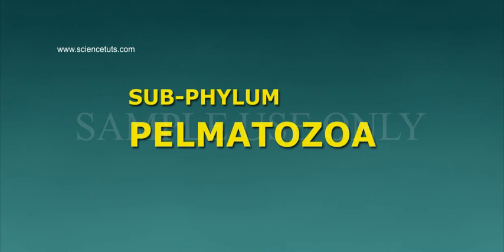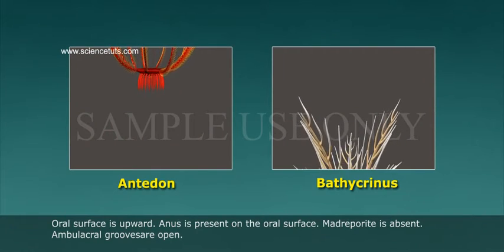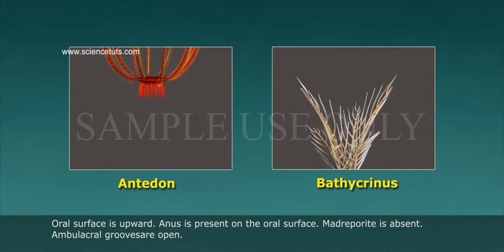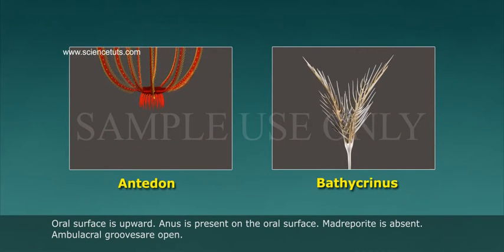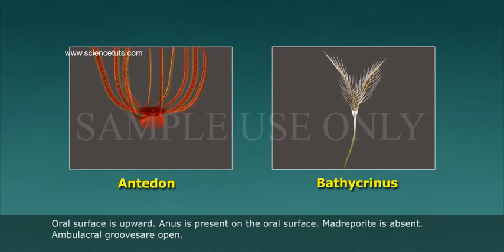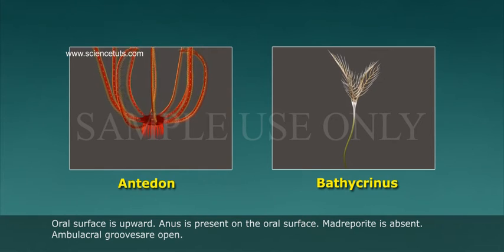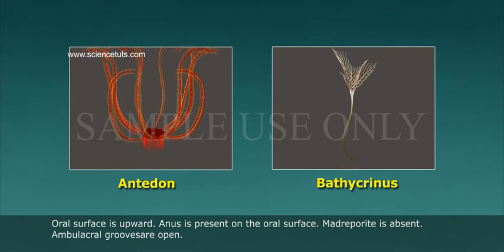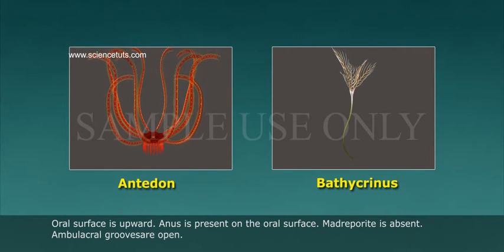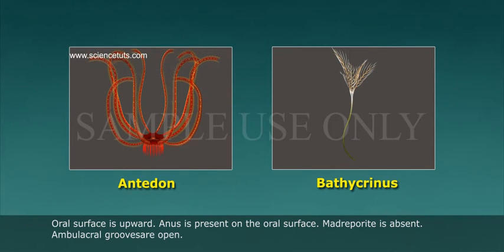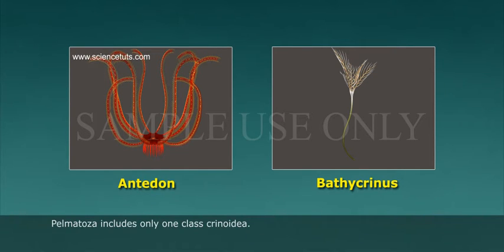Subphylum Pelmatozoa: the oral surface is upward, the anus is present on the oral surface, madreporite is absent, and ambulacral grooves are open. Pelmatozoa includes only one class: Crinoidea.